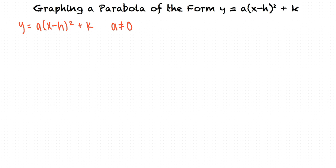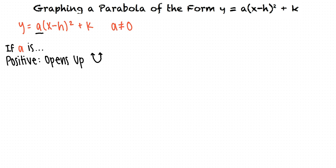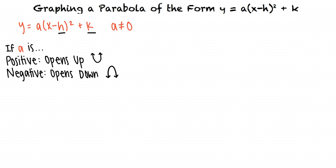I've never seen parabolas in this form before. Why would we want to write them like this? Writing parabolic equations in this form tells us a few things about the graph. First, the sign of a tells us which direction the parabola opens. If a is positive, the parabola opens upward, and if a is negative, the parabola opens downward. Additionally, the h and k values tell us about our vertex.